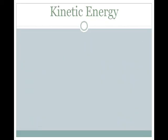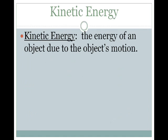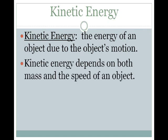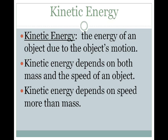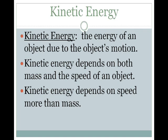Now let's look at kinetic energy. Kinetic energy is the energy of an object due to the object's motion — a lot of times this is called the energy of motion. Kinetic energy depends on the mass of the object and the speed of the object. So make sure you know: potential energy depends on mass and height, kinetic energy depends on mass and speed. However, kinetic energy depends more on speed than it does on mass.